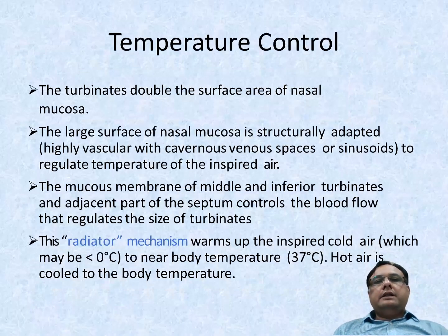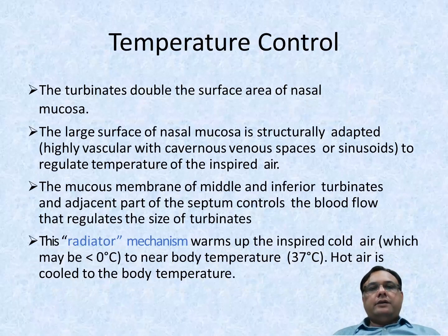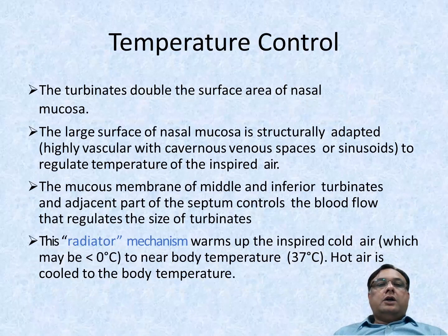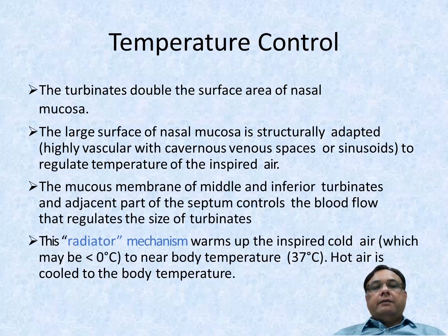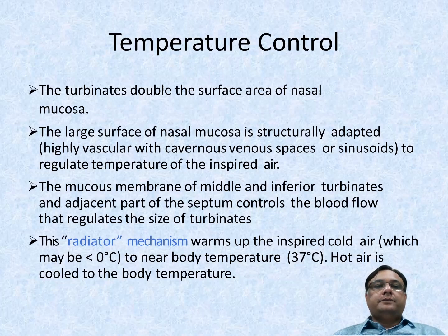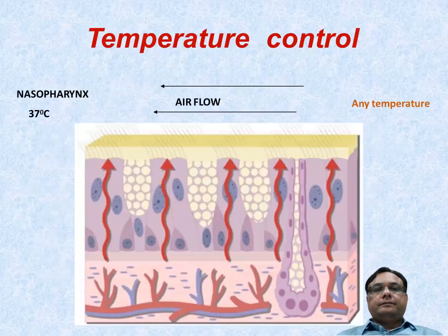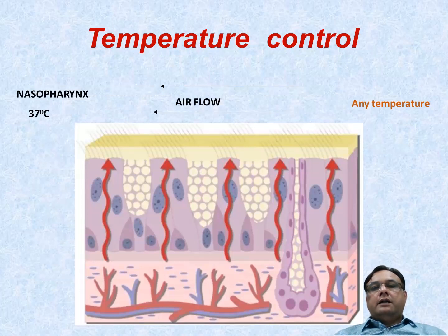Temperature control: the turbinates double the surface area of nasal mucosa. The large surface is structurally adapted with highly vascular cavernous venous sinuses to regulate temperature of the inspired air. The mucosa of the middle and inferior turbinates and adjacent part of the septum controls blood flow that regulates the size of the turbinate. This radiator mechanism warms up inspired cold air — which may be below zero degrees — near body temperature, and cools hot air to body temperature.